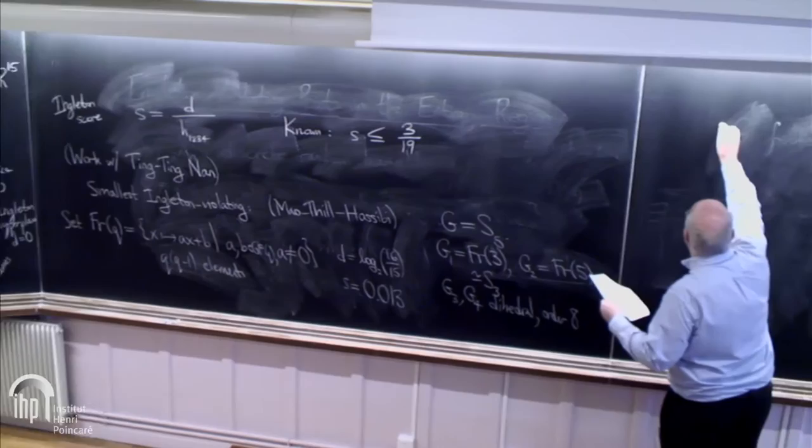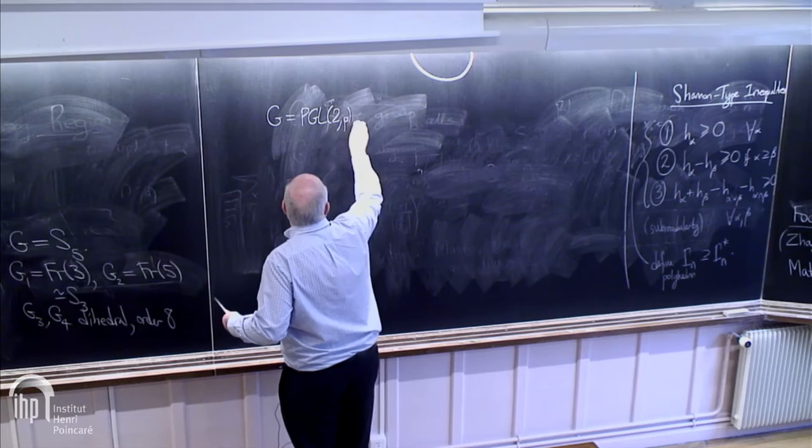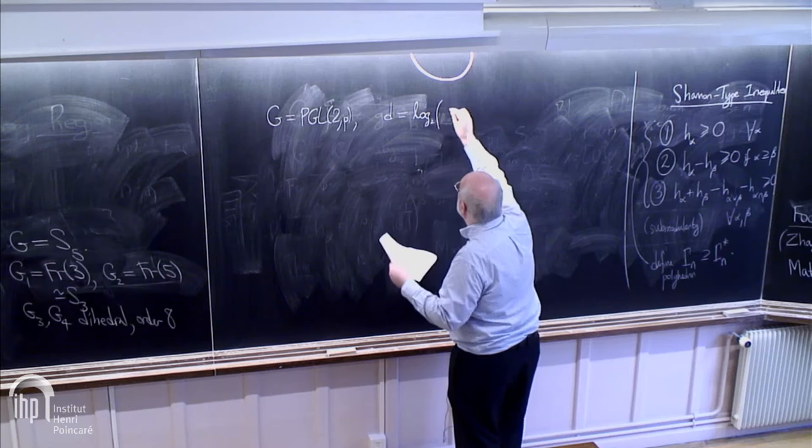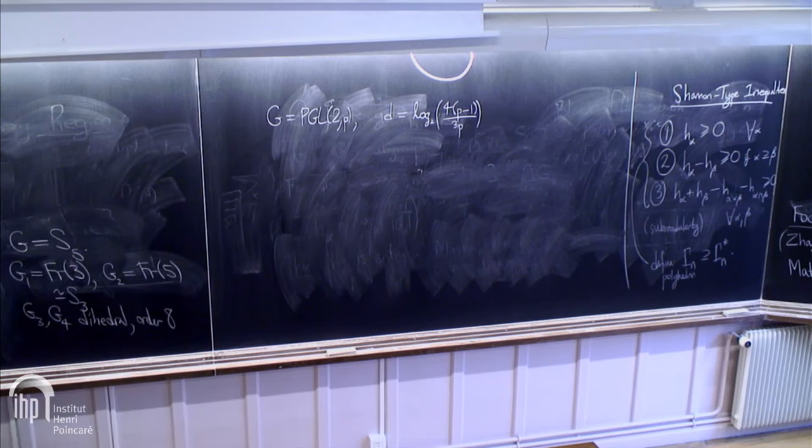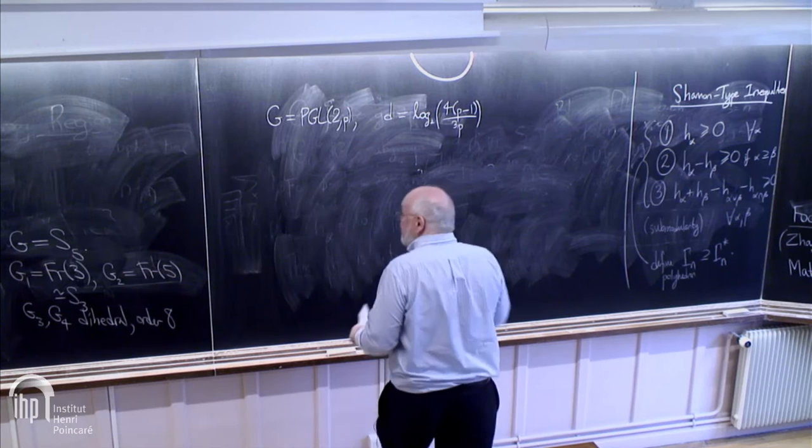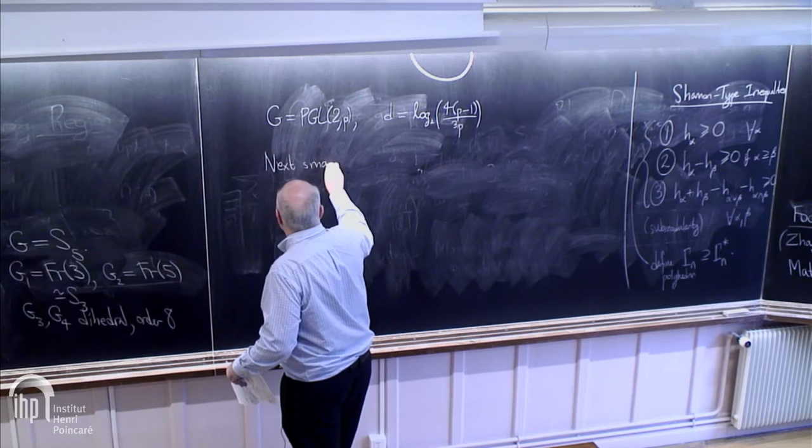They also found examples with PGL 2P, where D is log base 2 of 4P minus 1 over 3P, bounded by log base 2 of 4/3. As the size of the groups go up, these go down to 0. They're not threatening the bound.